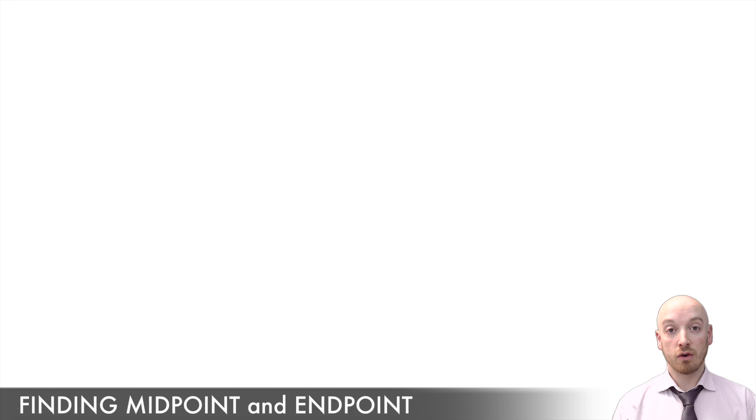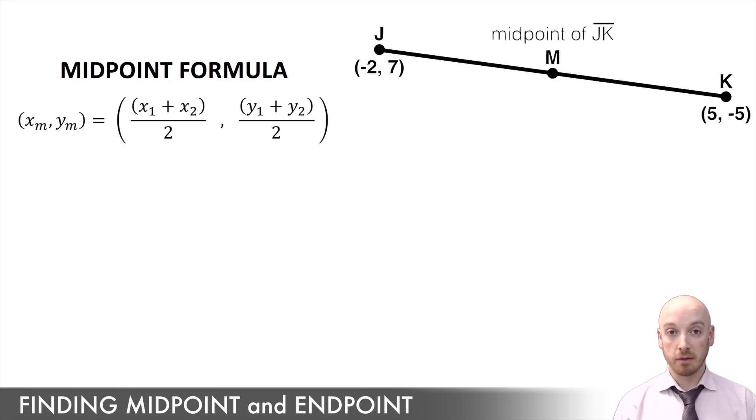Now finding the coordinates of the midpoint of a line segment is pretty straightforward, although this formula might suggest otherwise. But all we're looking for here are the x and y values, the coordinates of a point that lies exactly halfway between two others.